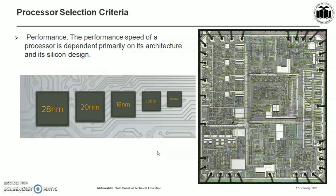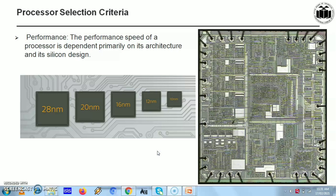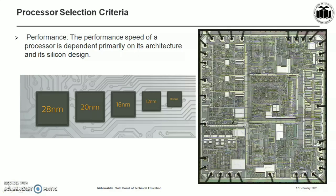The first and foremost consideration in selecting a processor is its performance. The performance speed of a processor is dependent primarily on its architecture and silicon design. Evolution of fabrication techniques helps in packing more transistors in the same area, thereby reducing propagation delay. Also, the presence of cache memory reduces instruction and data fetch timing. Pipelining and superscalar architectures further improve processor performance. Multi-cores are the new direction in improving performance.